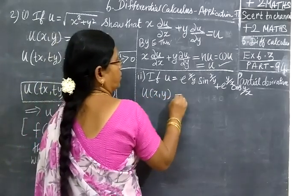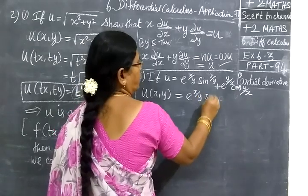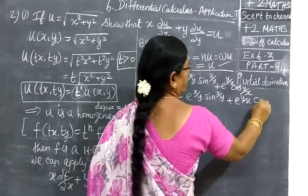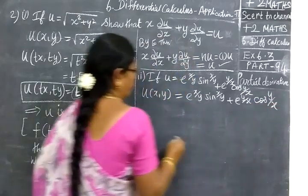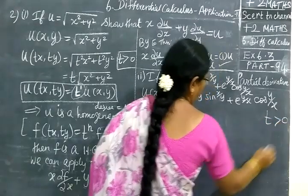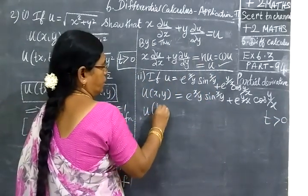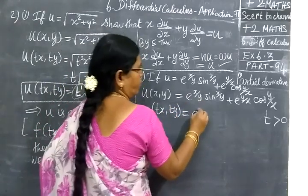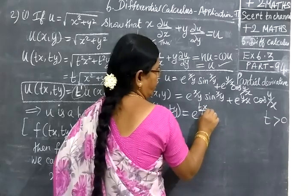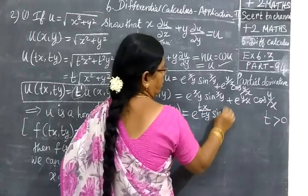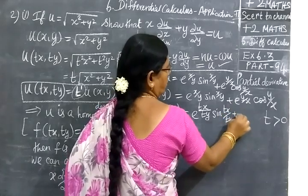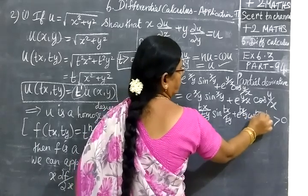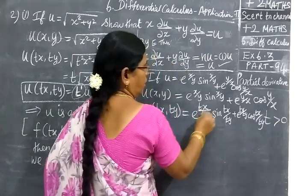For the next question, u of x, y equal to e power x by y times sin x by y plus e power x by y times cos x by y. Now for t greater than 0, we multiply x by t and y by t. So wherever x comes we write tx, wherever y comes we write ty. We get e power tx by ty times sin tx by ty plus e power tx by ty times cos tx by ty.